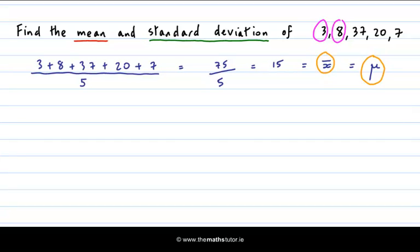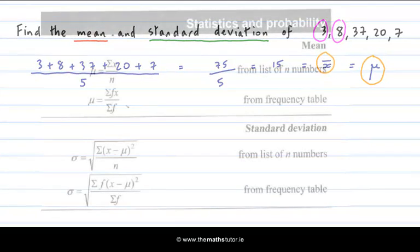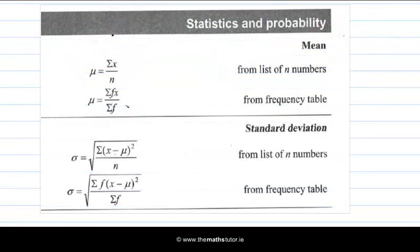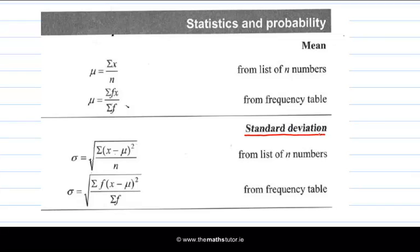Let's have a look at the formula for standard deviation. You'll find this on page 33 of your tables and formula book. Here we have the formula for standard deviation. It's on page 33 of your tables book. I'll circle it here in red. And you see it says from a list of n numbers.